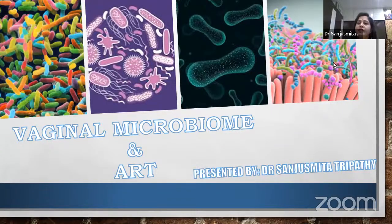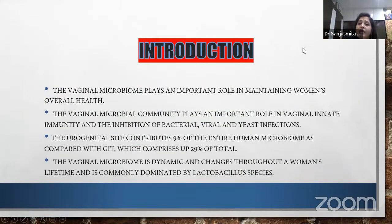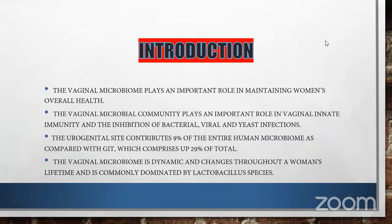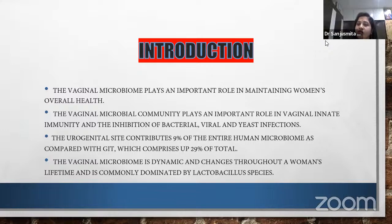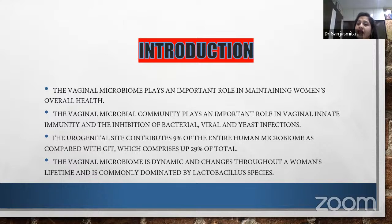Coming to the introduction: the role of vaginal microbiome in assisted reproductive technique. The vaginal microbiome, though it receives less attention, is highly important in maintaining a woman's overall health. This community plays an important role in vaginal innate immunity and the inhibition of bacterial, viral, and yeast infections. The urogenital side contributes 9% of the entire human microbiome, whereas the gastrointestinal tract contributes almost 29%. The vaginal microbiome is dynamic and changes throughout a woman's lifetime, and the community is mainly dominated by lactobacillus species.